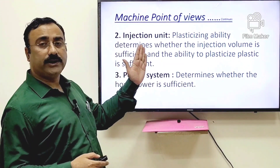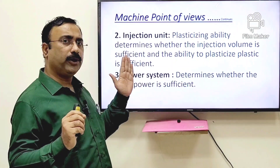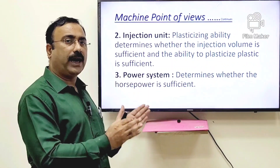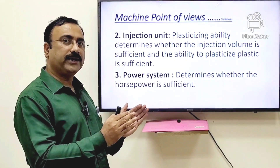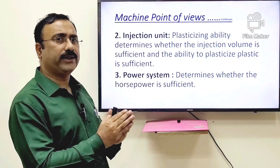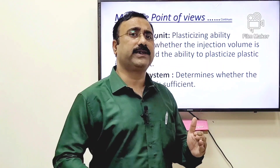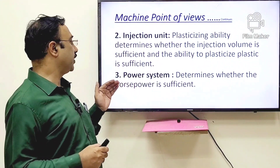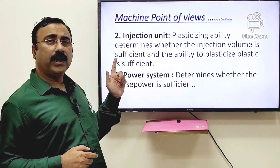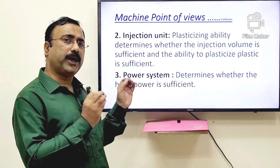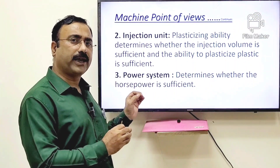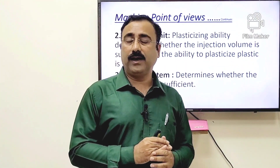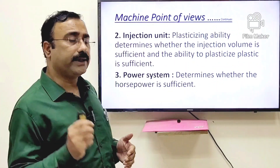For the injection unit, it depends on your required production per hour. You have to consider the per-hour production weight, which is called the shot weight. The shot weight of a particular cycle should be plasticized in the injection side at a convenient position. The shot weight is calculated as: product weight multiplied by the number of cavities equals your shot weight. This shot weight must be plasticized within a given period of time, otherwise your cycle time will increase.